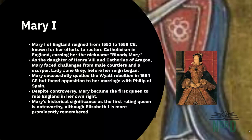Mary I of England reigned as Queen from 1553 to 1558. She was the eldest daughter of Henry VIII of England and Catherine of Aragon. Her reign was marked by her efforts to restore Catholicism in England, which earned her the nickname Bloody Mary, due to her persecution of Protestants. As a queen regnant, Mary faced challenges from prejudiced male courtiers and even a usurper, Lady Jane Grey, before her reign even began. She successfully quelled the Wyatt Rebellion in 1554.